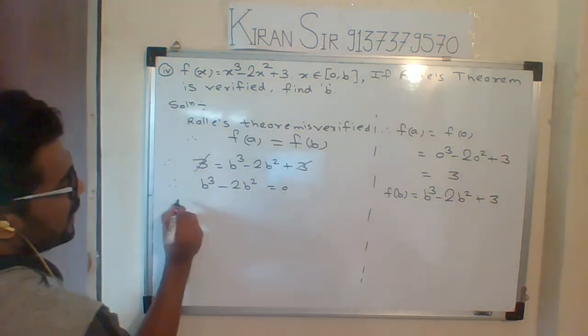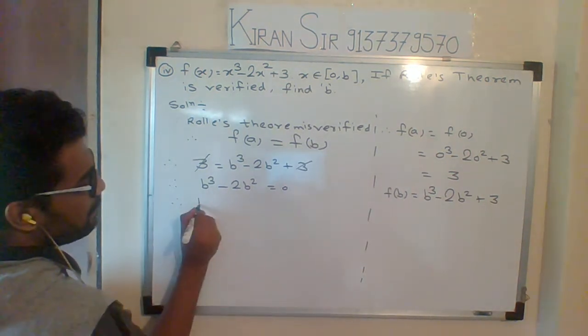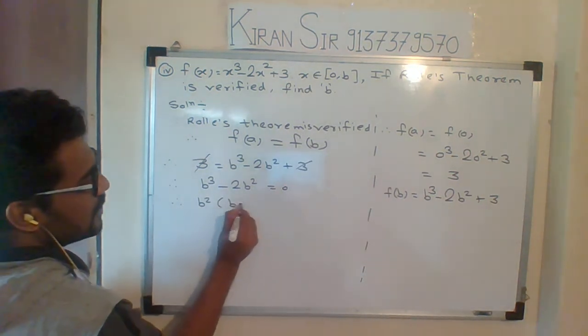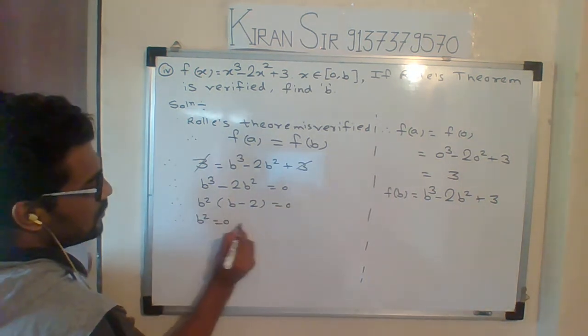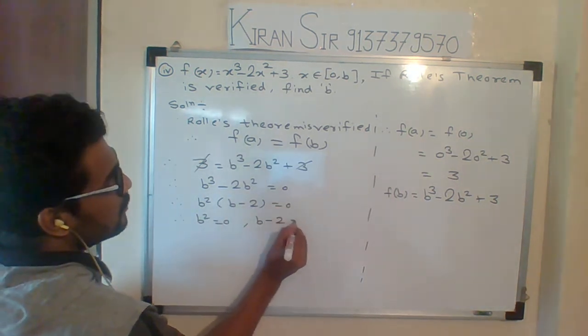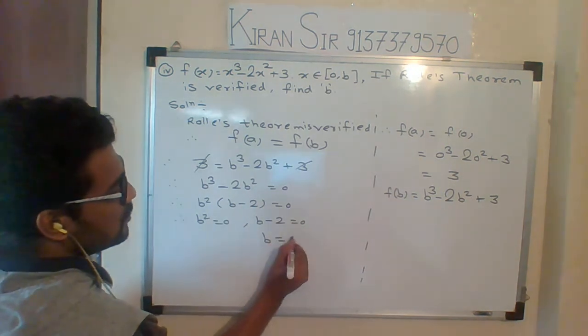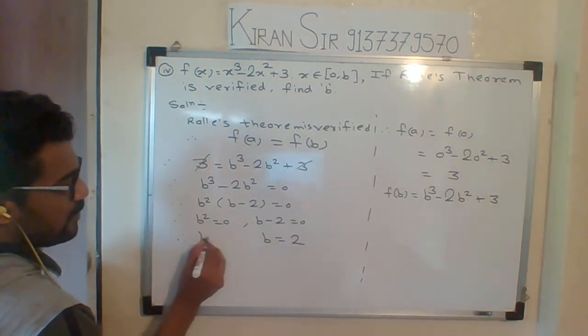So what you can take common students? You can take b squared common. So b squared equals to 0, and b minus 2 equals to 0. What if b equals to? 2. And b equals to 0.